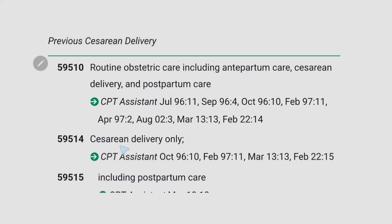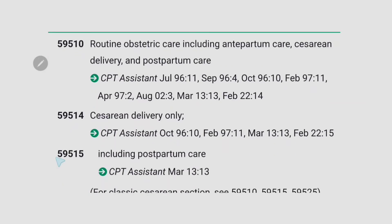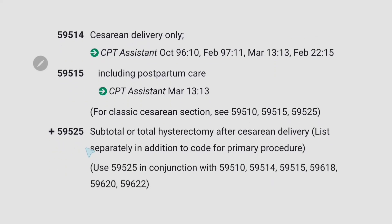59514 is for caesarean delivery only, and 59515 is for caesarean delivery including postpartum care. You have to code this based on the terms mentioned in the operative report or in the CPC exam question — whether they mention caesarean delivery only, or postpartum care is included, or routine obstetric care including antepartum care. The add-on code 59525 is for subtotal or total hysterectomy after caesarean delivery, and must be used in conjunction with those caesarean delivery codes.